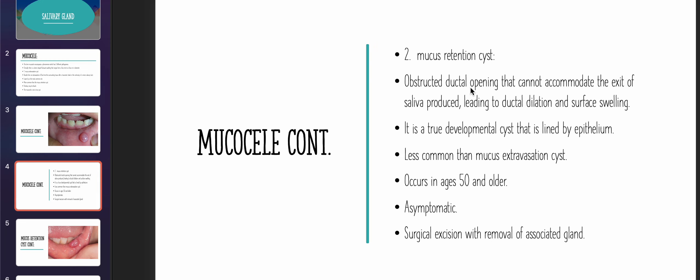The second type is the mucus retention cyst, which involves an obstruction. The key differentiating point: mucus extravasation cyst is due to a traumatic break, whereas mucus retention cyst results from an obstruction in the ductal opening, causing saliva to accumulate and produce swelling. It is a true developmental cyst lined by epithelium. It is less common than the extravasation cyst, and the common age is 50 and older.